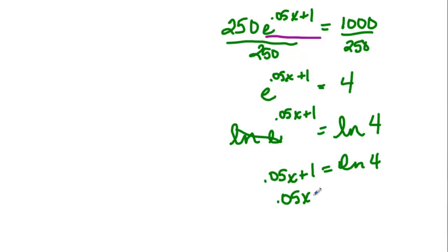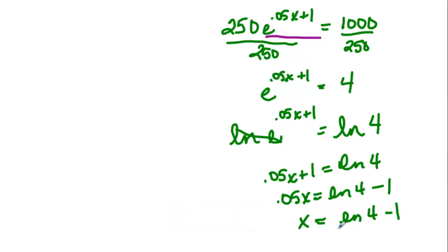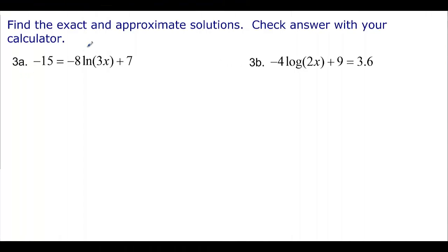So 0.05x equals ln 4 minus 1. Don't simplify this to 3, because ln 4 is not 4. Then divide by 0.05, so x equals (ln 4 minus 1) divided by 0.05.